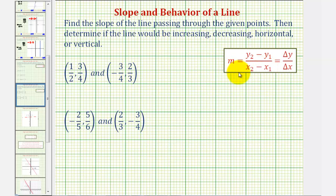Once we find the slope, if it's positive, negative, zero, or undefined, it'll determine whether the line is increasing, decreasing, horizontal, or vertical.